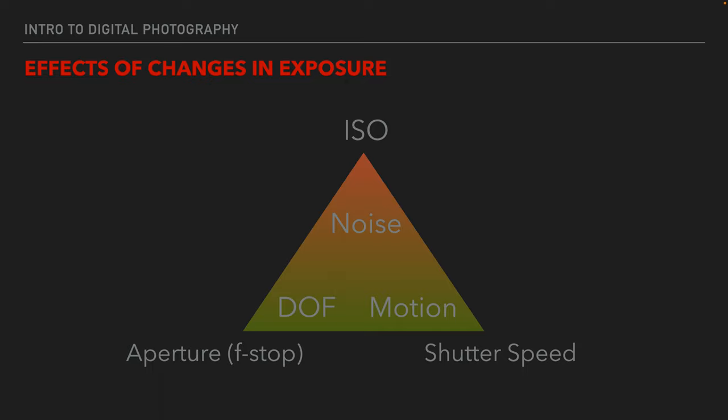Aperture or f-stop will affect our depth of field — how much or how little of our image is in focus. If you want everything in focus, you're going to need to use a higher number or a smaller opening. If you want less things in focus, you're going to need to use a lower number or a larger opening. And shutter speed will affect motion: when we change our shutter speed it will either stop our motion or blur our motion, so we need to be aware of that as well.